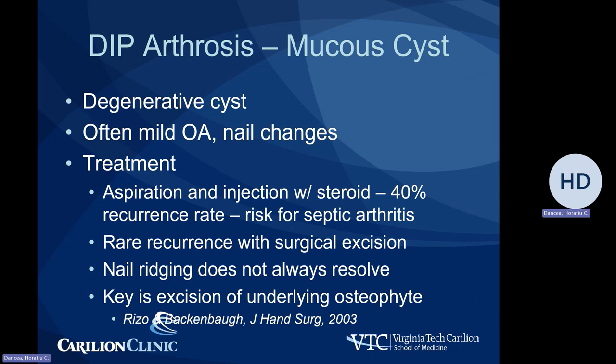Aspiration and injection with steroid have been attempted in the past for mucous cysts, but have a relatively high recurrence rate and also increase the risk for septic arthritis, so this is not recommended at this point. In case of surgical excision, recurrence is quite rare, although possible. When offering patients surgical excision of a mucous cyst, we should advise them that nail ridging and nail plate changes do not always resolve after cyst excision. The key of surgical excision is actually excision of the underlying osteophyte and the stalk of the cyst — not as much the cyst itself — which significantly decreases the chance of recurrence.